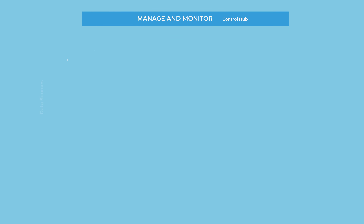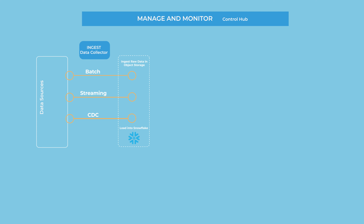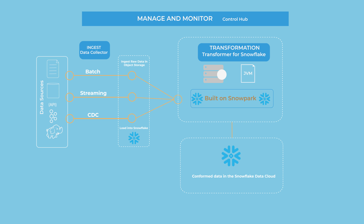Many of our customers are already doing this today using batch, streaming, or CDC workloads. While using the Data Collector, you can read from a variety of data sources — on-premises, in the cloud, API, Kafka, Hadoop, and so on — to ingest and load that data directly. When it comes to Snowflake pipelines, they read from and write to Snowflake. They always perform batch processing — each time a Snowflake pipeline runs, all data specified in pipeline origins is processed, and then the pipeline stops.